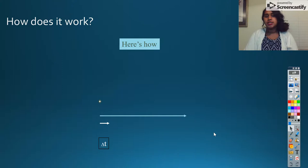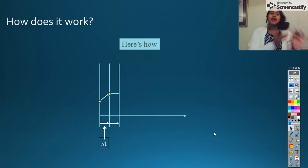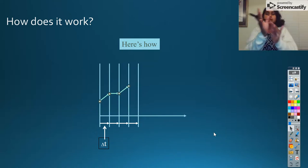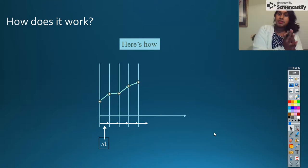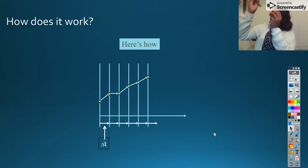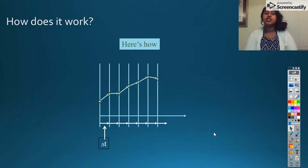But how does it actually work? Here's a visual representation. If this was my delta X or delta T, my change in my independent variable, I can estimate at each point and look at its slope very individually. And the smaller my step size is, the better the approximation of that original function is going to be.